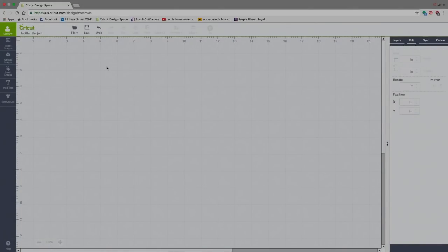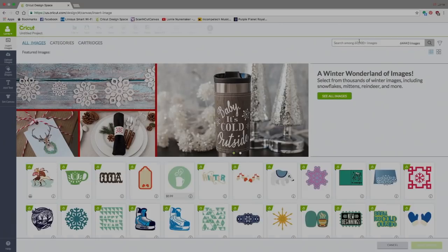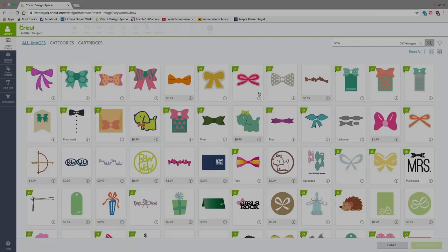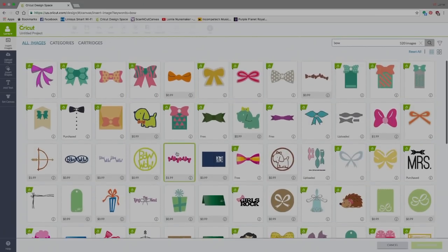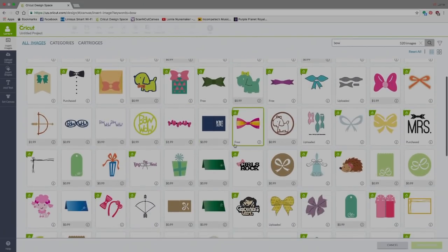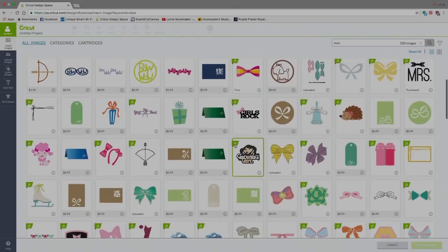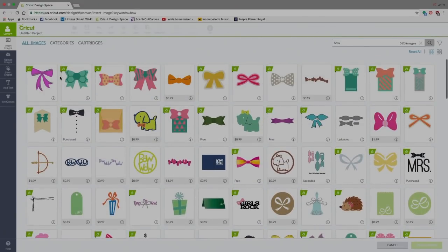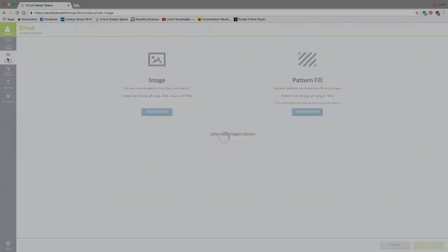Okay, so here we are in Design Space. And you have a couple options. If you want to use the SVG that I provided, I'll walk you through that. But I just wanted to let you know, if you just go to Insert Images, and up here in the search bar, click Bow. There are lots of bows here in Design Space that you could also use and make different variations. So feel free to use those if you want. But I'm going to use the SVG that I have provided. It's in the comments below this video. You can download it from my Dropbox.